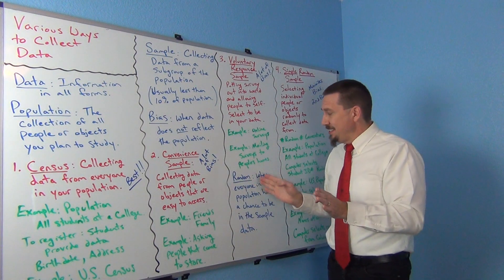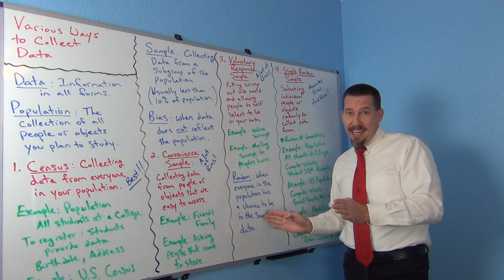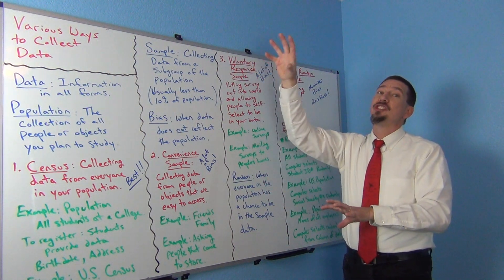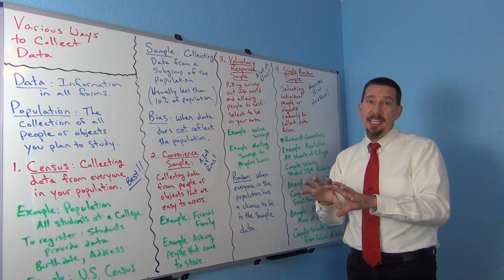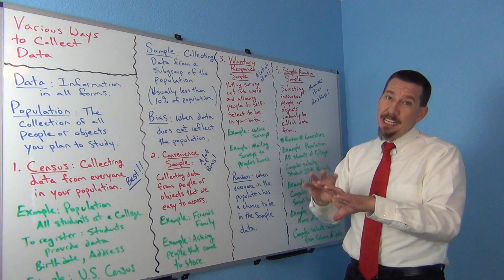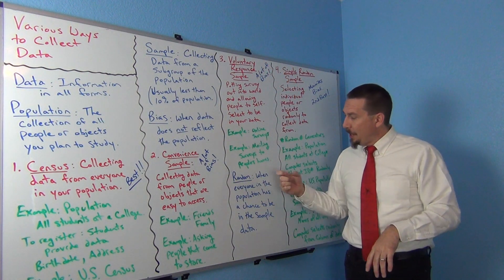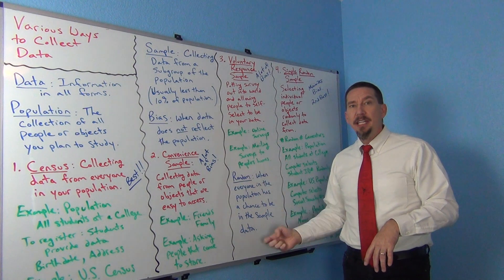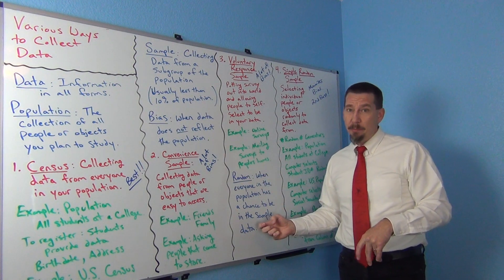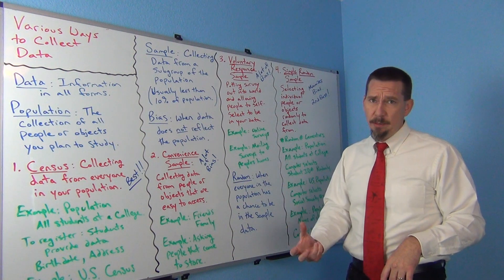So it's not a census. You're not collecting data from everybody — you're still collecting a sample. But everyone in the population has a chance to be in your sample. Oftentimes we'd like it to be an equal chance, though that doesn't always happen. The idea is trying to give everyone in your population a chance to be in your sample, and that's what we refer to as random.